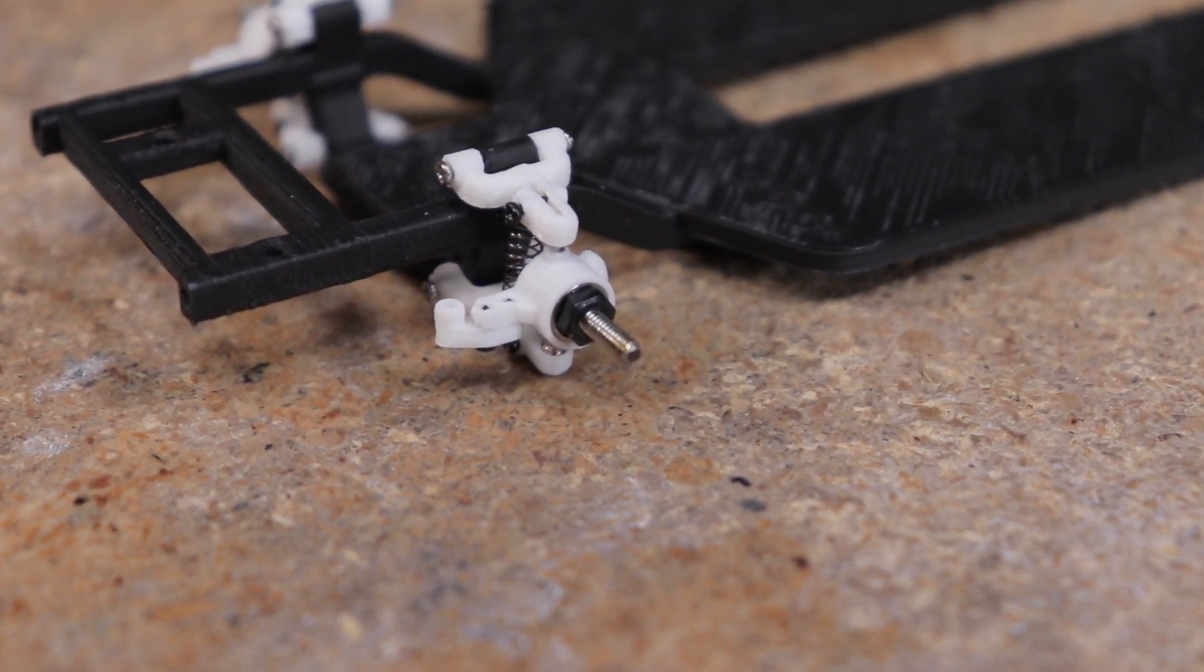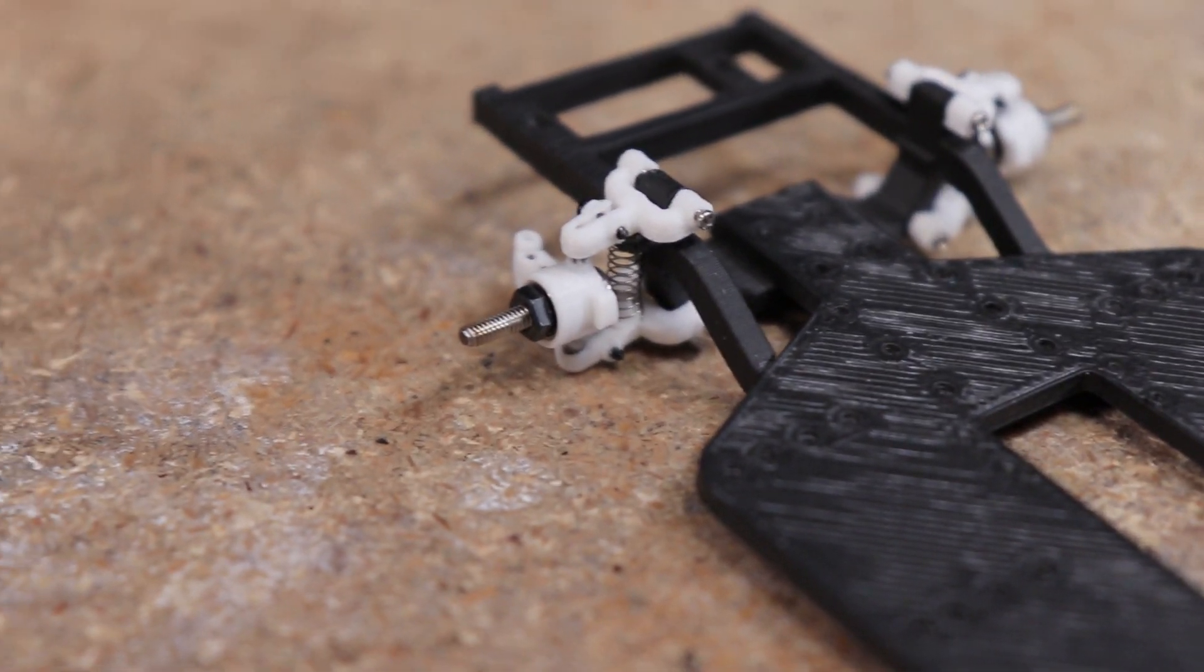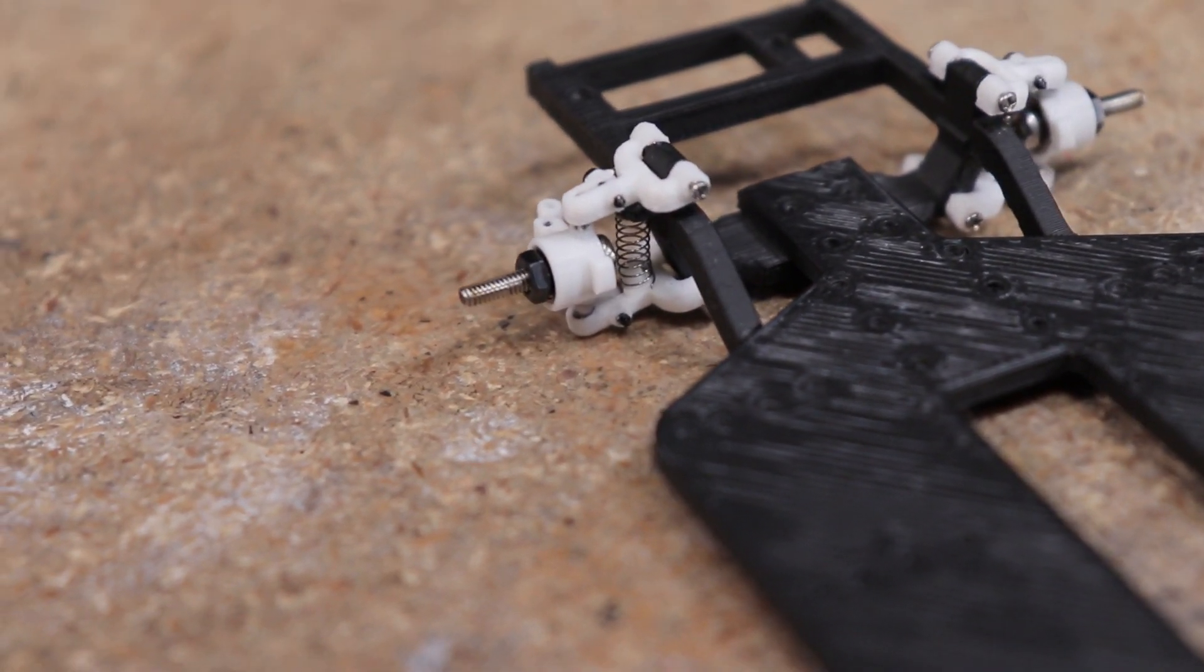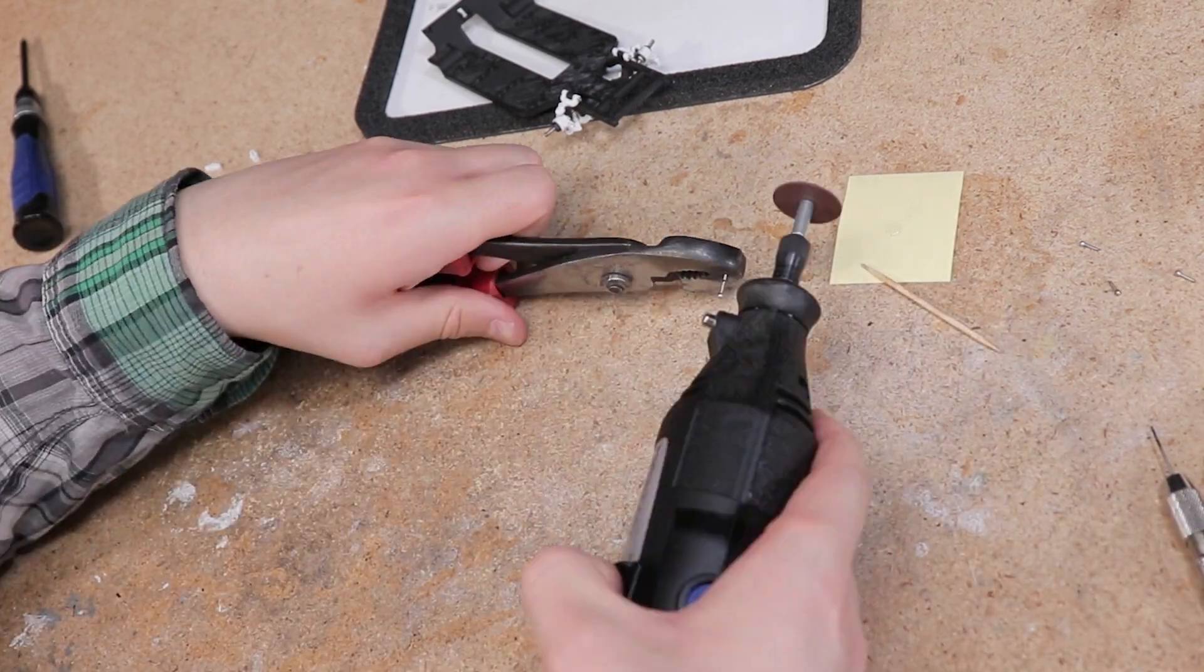Although this assembly is designed to be FDM 3D printable, at some point I really want to make one using parts that are SLA 3D printed as I think the much smoother texture is really going to take the appearance up a notch.